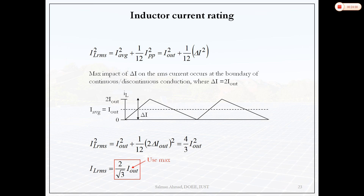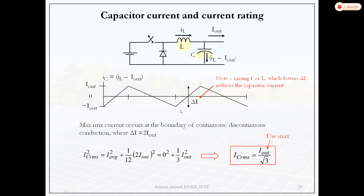At the boundary condition — where the inductor current just reaches zero before the next switching cycle — the inductor RMS value is (2/√3)·I_out. For the capacitor current, the average is zero. The capacitor RMS value can be found from the ripple current: I_C,rms = ΔI_L / (2√3), or equivalently √(ΔI_L²/12). These details will be discussed further when covering the buck converter in detail.